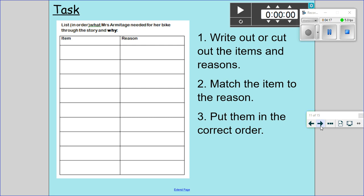So for example, she added the soap and the towel and they were to keep her hands clean. So you'd match those reasons up. And then I'd like you to try and put the reasons in order of when she added them to her bike. So press pause, minimise video and have a go at that task in your books. Once you've done, come back, open it up and we'll go through the answers.